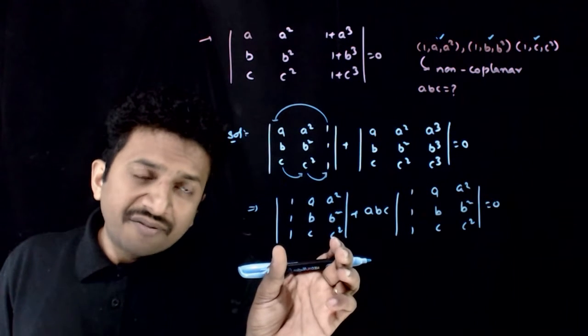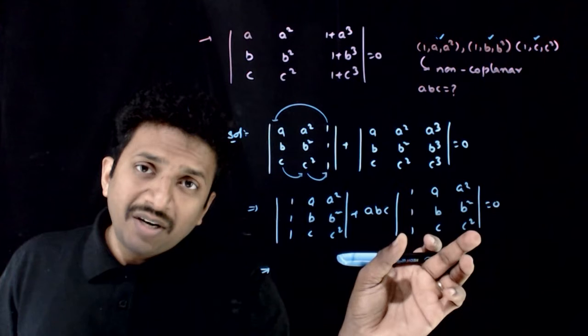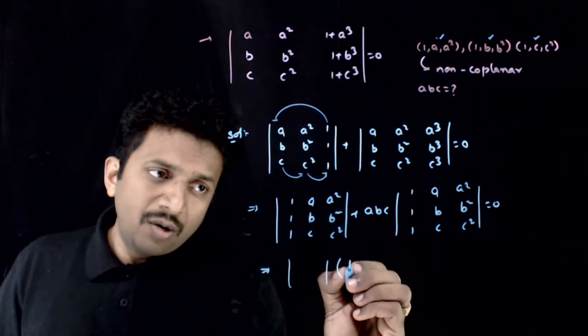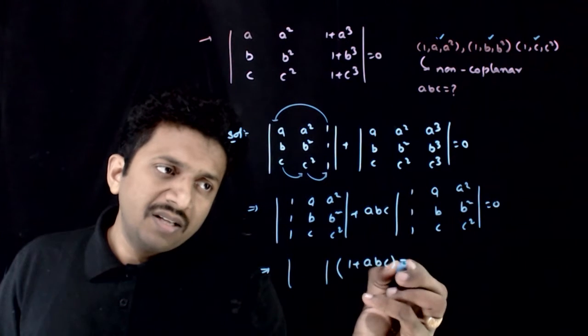This implies, you have a determinant, you have the same determinant here, you can take that as common. So, determinant of that into 1 plus A, B, C is equal to 0.